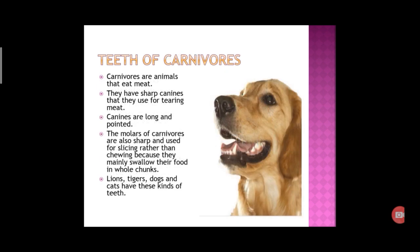Teeth of Carnivores. Carnivores are those animals who eat meat. The canines of carnivores are long, sharp and pointed so they can tear the food. Their molars are also very sharp for slicing rather than chewing, then swallowing the food chunk. For example, tiger, lion, dogs, etc.